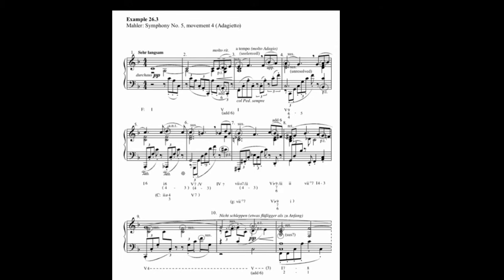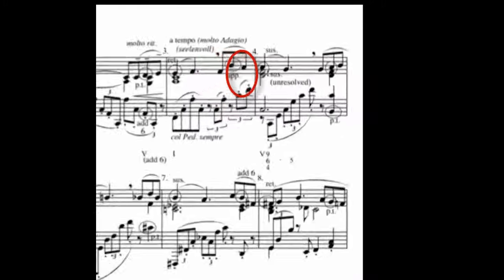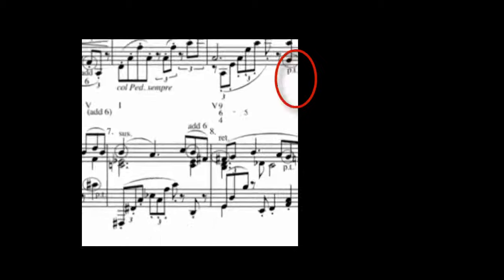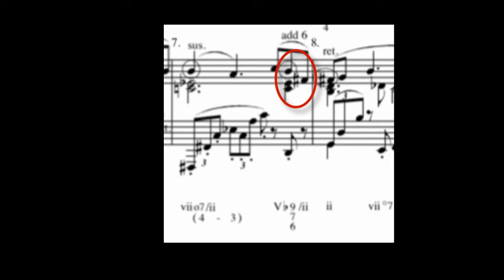Other interesting harmonic features in this example include the use of dominant chords built up to the 9th in measures 4 and 7, as well as dominant chords with the added 6th in measures 2, 7, and 10. The added 6th on the V7 of ii in measure 7 is a particularly interesting example. On this secondary dominant 7th, Mahler included both the minor 9th E-flat and the minor 6th B-flat as frozen non-chord tones.